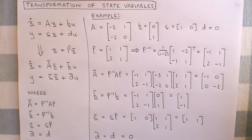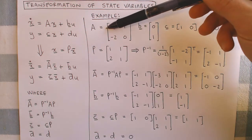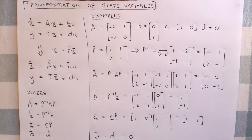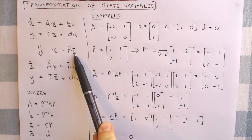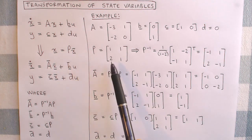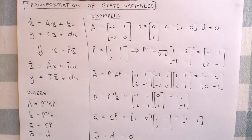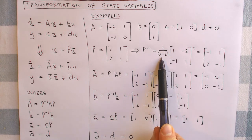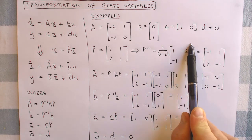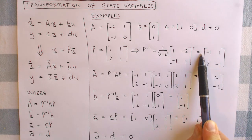Let's look at an example. Suppose we have a second order system with the original state variable system described by these system matrices. The transformation matrix that transforms the original states x to the new states x-bar is given by this matrix. For our calculations of the new state matrices, we need the inverse of the transformation matrix as well, which is given by 1 over the determinant times the adjoint matrix, which results in this matrix.